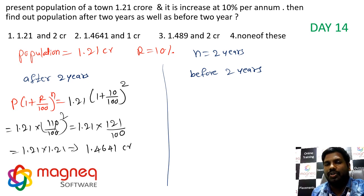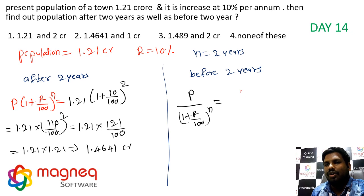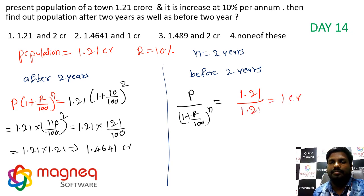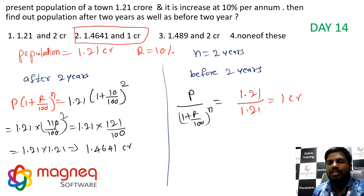Before 2 years: P by (1 plus R by 100) whole power N equals 1.21 by 1.21 equals 1 crore. So after 2 years: 1.4641 crore; before 2 years: 1 crore.